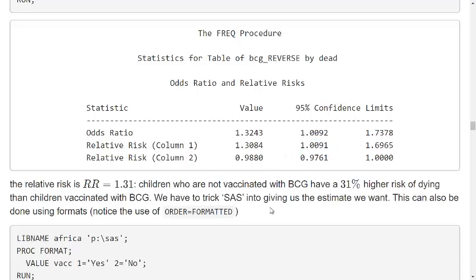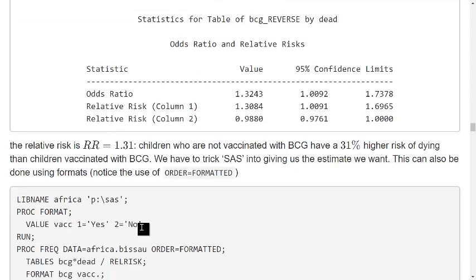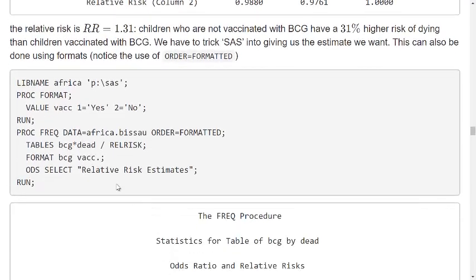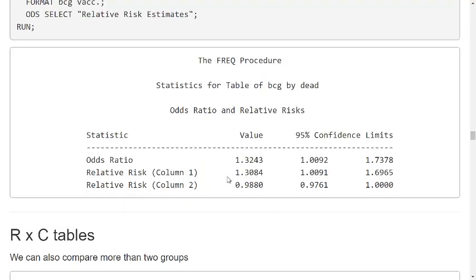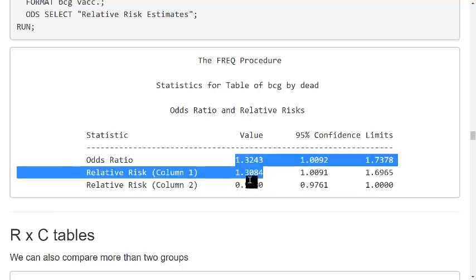Of course, instead of coding a new variable, tricking SAS, we can also use formats. I will leave the code here and not talk about it. You can go to the home page and look at the code if you want to try it out yourself. You specify the format that 1 means yes and 2 means no, then you calculate it and now it's switched around.